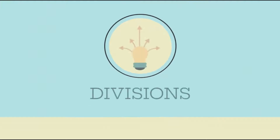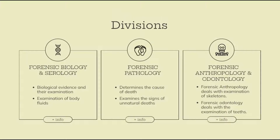Although there are many divisions of forensic science, here we will discuss some of them. Forensic Biology and Serology examines biological evidence such as body fluids, tissues, DNA, etc. Forensic Pathology deals with unnatural death cases, where experts examine signs to determine whether it is a homicide or suicide, and determine the cause of death such as poisoning, strangulation, stabbing, or bullet injuries.